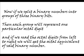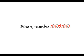And if we read the octal digits from left to right, we will get the octal equivalent of the said binary number. If we go through one example, it would be easy to understand. Suppose we have a binary number 1 0 1 0 0 1 0 1 0.